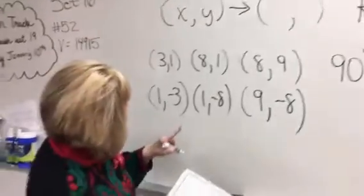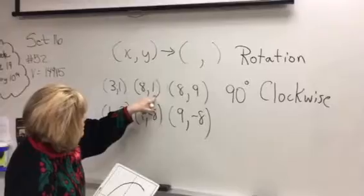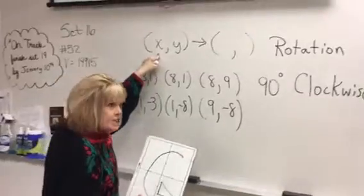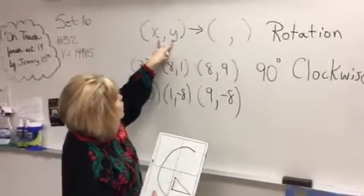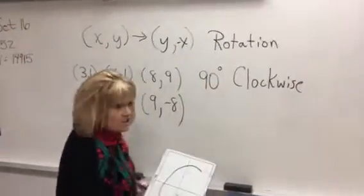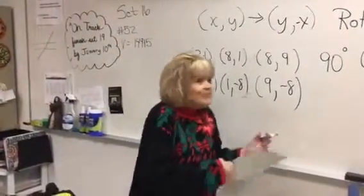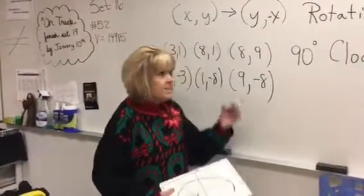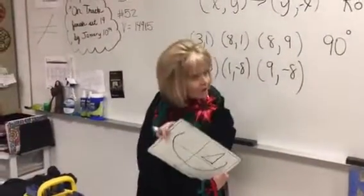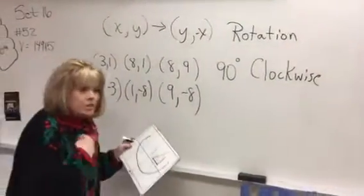There's actually a pattern here: the point (3, 1) became (1, -3), and (8, 1) became (1, -8). Anytime you do a 90-degree clockwise rotation, there's a rule where you flip the coordinates and negate the x term. But in my opinion, nobody can ever remember that, because there are different rules for 180 degrees, 270 degrees, and counterclockwise rotations — so to me that's pretty much useless.